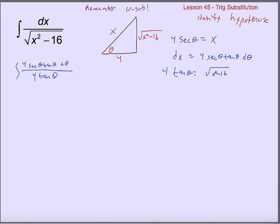Notice there's a whole bunch of canceling. The 4s cancel and the tangents cancel, so what I'm left with is just the antiderivative of secant theta d-theta. We discussed this in recent classes — this is one we're supposed to have memorized. It is the ln of the absolute value of secant theta plus tangent theta.